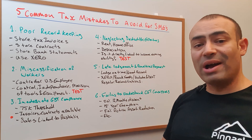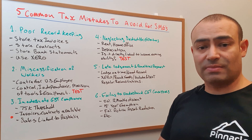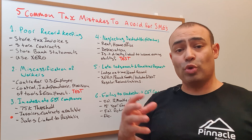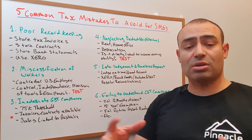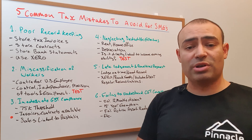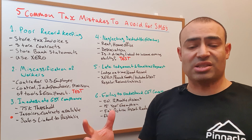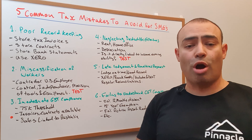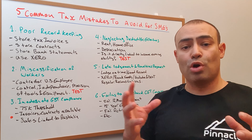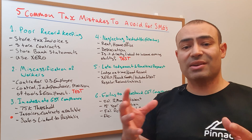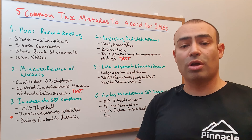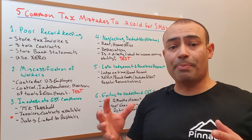Number four is neglecting deductible expenses. Some home office expenses are deductible. Rent can also be deductible if you are operating a business from your home, so long as the business that you're operating is in an entity separate to the house that you're living in. For example, if you own the home yourself and then you have a company running that business, then you can potentially claim rent on the portion of the house that the business is using without incurring capital gains tax when you sell the property.